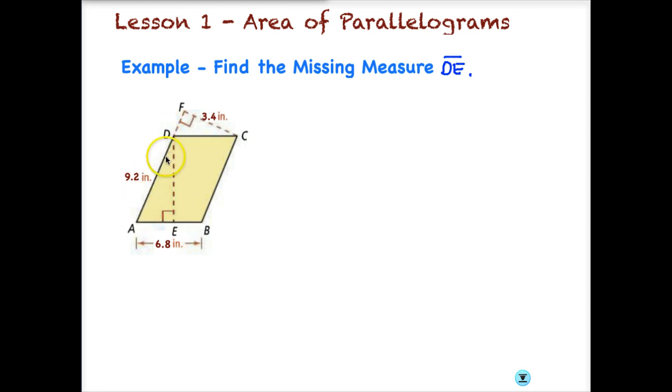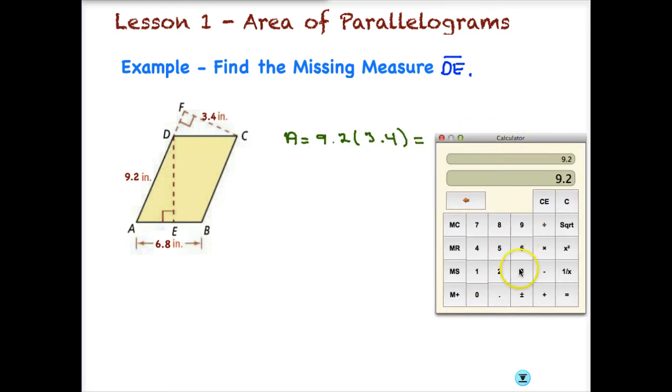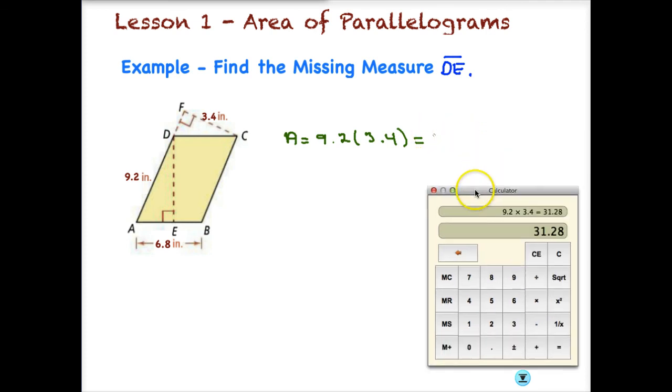3.4 inches forms a perpendicular with that base 9.2. So what I can do is I can find the area. So my area is going to be base, which is 9.2, times my height, which is 3.4. And that gives me an area of 9.2 times 3.4, 31.28. And these are inches squared. Okay, so that's good. I now have an area.